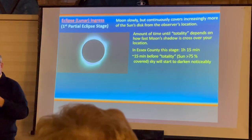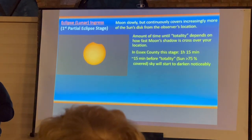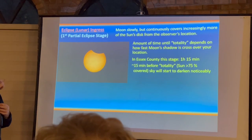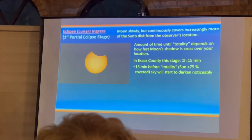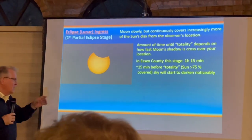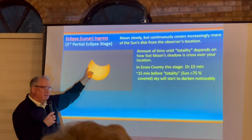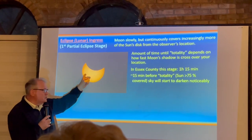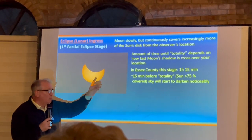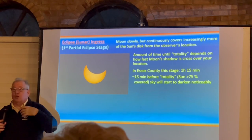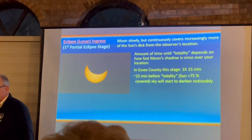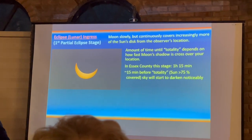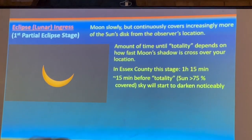When are you going to start seeing some really cool things, besides using your eclipse glasses to see the edge? The sun has to be about 75% covered — about three quarters covered — before you're going to start to notice things happening around you.